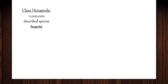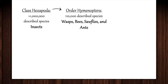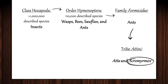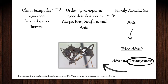The class Hexapoda is home to over one million described species of insect. Of those species, roughly 111,000 of them belong to the order Hymenoptera, the phylogenetic group designated for the wasps, bees, sawflies, and ants. The family Formicidae, in which the ant group is categorized, is divided into many diverse and specialized genera. Of those genera, two have been described colloquially as leafcutter ants: Atta and Acromyrmex, the latter being the subject of focus for this presentation.